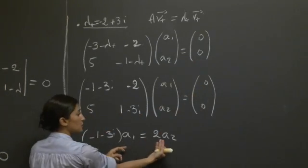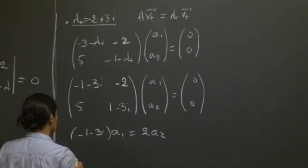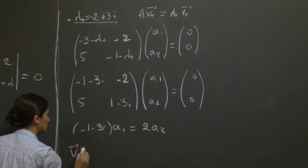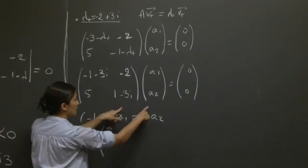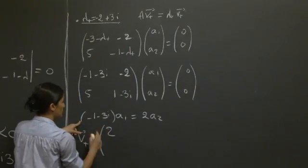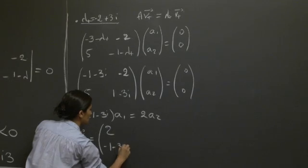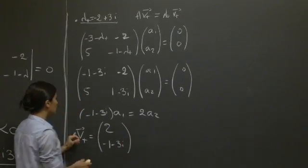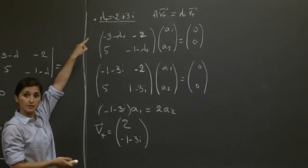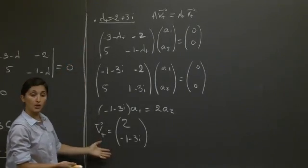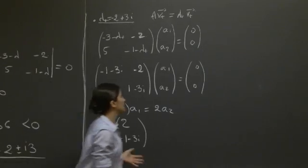And I just brought the minus 2 on this side. So here, you can see that if we pick a1 equals to plus 2, which would be our first entry, we can then cancel out these two and just have a2 equals to minus 1 minus 3i. So this would be one eigenvector associated with this eigenvalue. We could have picked other ones; they're basically parallel to this one.